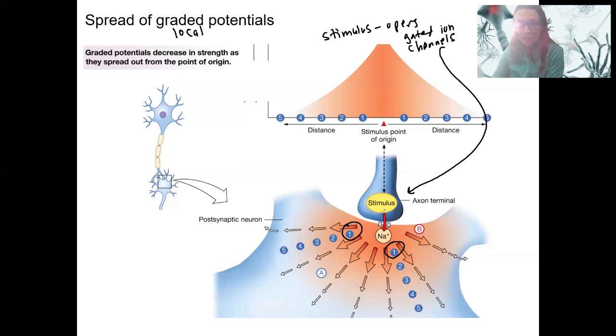We're zoomed in to an axon terminal and a postsynaptic neuron. This is our presynaptic membrane here, point of stimulation, and then point number one is the closest location. This axis here is going to be amount of depolarization, representing the strength of that stimulus as it travels away from the site of origin. That change, that depolarization decreases as we get farther away from the site of stimulation.